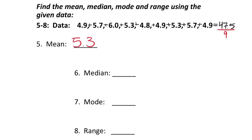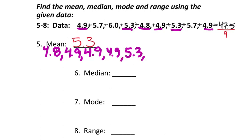I see 4.8 is the smallest. Then 4.9 is next, but I see three of those: 1, 2, and 3. Yeah, that looks correct. 5.3 two times. And 5.7, twice right there. And then 6.0.